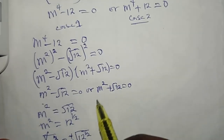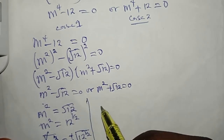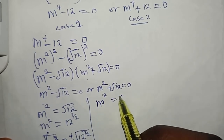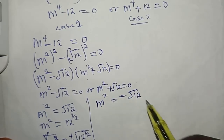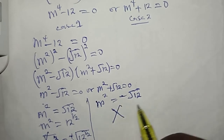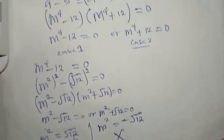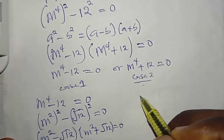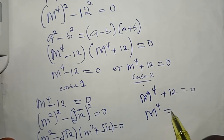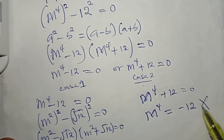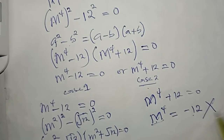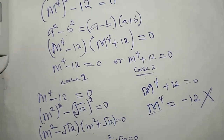Coming back to the second sub-case of Case 1: m squared equals negative root 12. You can see there is no real solution to this, so I'm going to reject this. For Case 2: m power four plus 12 equals zero, which implies m power four equals negative 12. There is no real solution to this because there is no real value of m that when raised to power four gives you negative 12, so I am also going to reject this one.